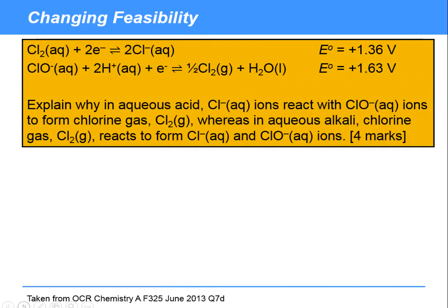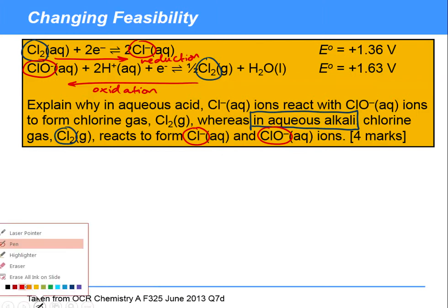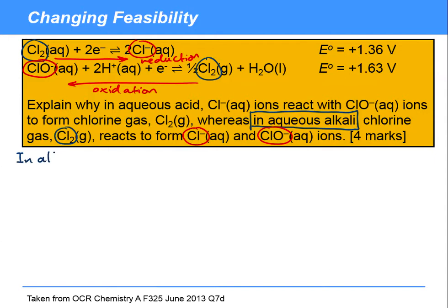Now we've got to think about what happens under alkaline conditions. So in aqueous alkali, according to this, we've got something different. This time it says chlorine gas is reacting to form Cl⁻ and ClO⁻ — chlorate and chloride. So we've got the reverse reaction happening — this time reduction and oxidation are swapped. So in alkali, the reverse reaction takes place.